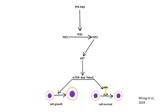The pathway begins with activation of receptor tyrosine kinases (RTKs) or RAS proteins, which stimulate PI3K, a lipid kinase. PI3K catalyzes the phosphorylation of PIP2 (phosphatidylinositol-4,5-bisphosphate) to PIP3 (phosphatidylinositol-3,4,5-triphosphate), a key signaling molecule in this pathway.